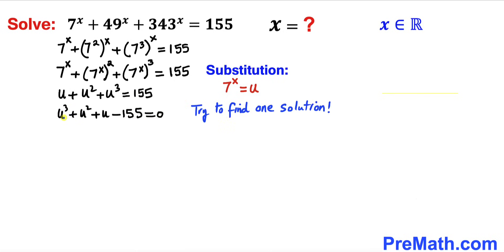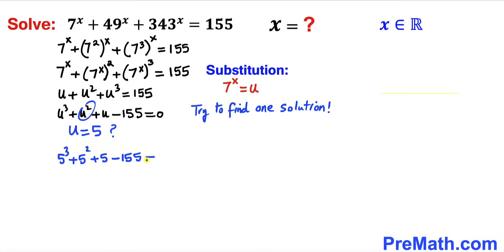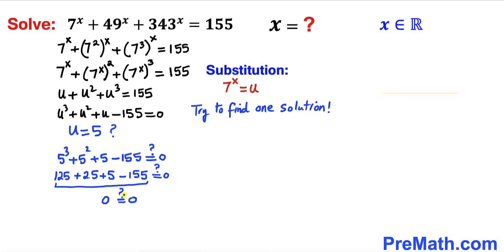Since we are dealing with this cubic equation, we are going to find one solution that gives us a clue. If we try u equal to 0, 1, 2, 3, or 4, those don't work. How about u equals to 5? So 5 power 3 plus 5 power 2 plus 5 minus 155 — that's 125 plus 25 plus 5 minus 155 — equals 0. This is indeed a true statement, so u equals to 5 is indeed our solution.